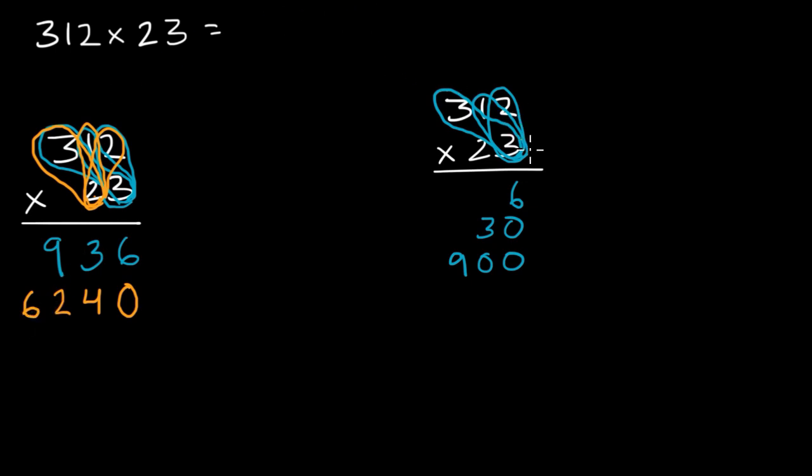If I were to do it with the partial products technique, I would say 20 times 2 is 40. I would say 20 times 10 is 200. And I would say 20 times 300 is 6,000. So once again, I've just broken it all up. I have more partial products. While here, I only have two partial products, is one way to think about it.